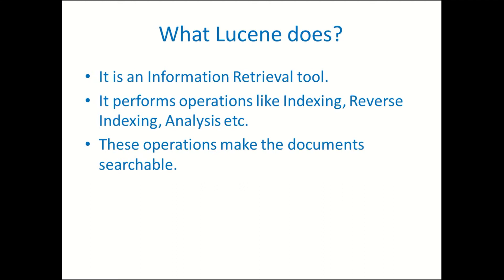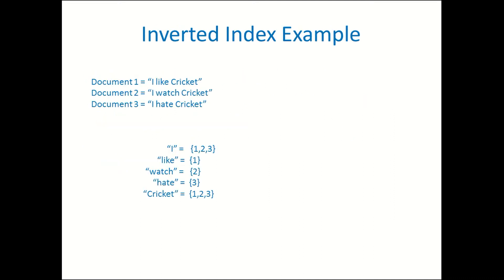An index in Lucene is pretty much similar to an index in a book. The index in a book shows us the topics and the page numbers where they can be found. It's pretty much the similar thing — not exactly, but indexing also gives us the positional information about the terms, and that's really helpful in searching the documents.